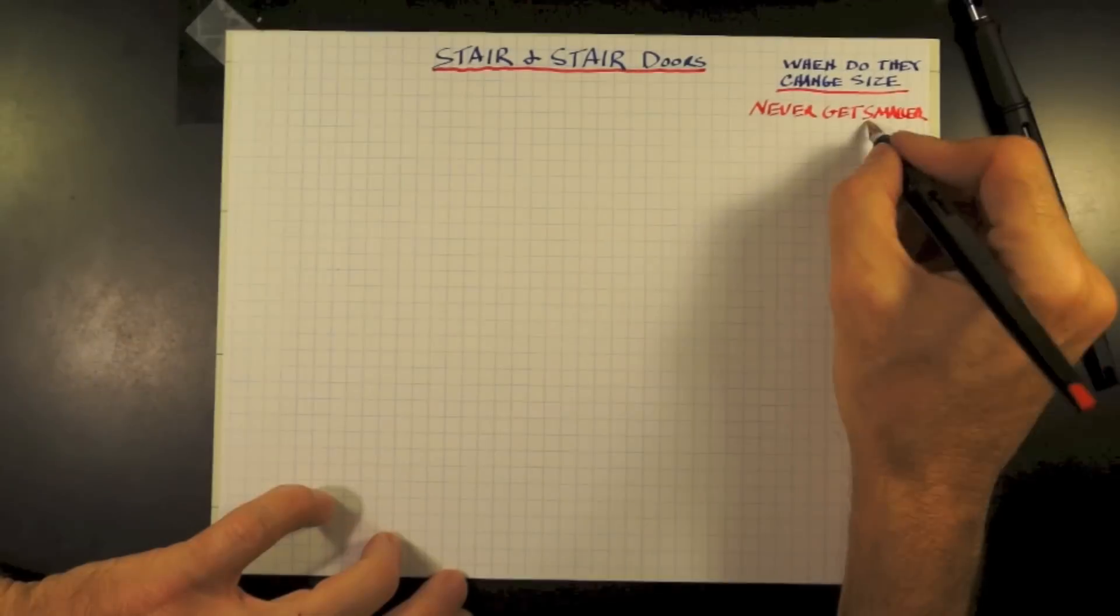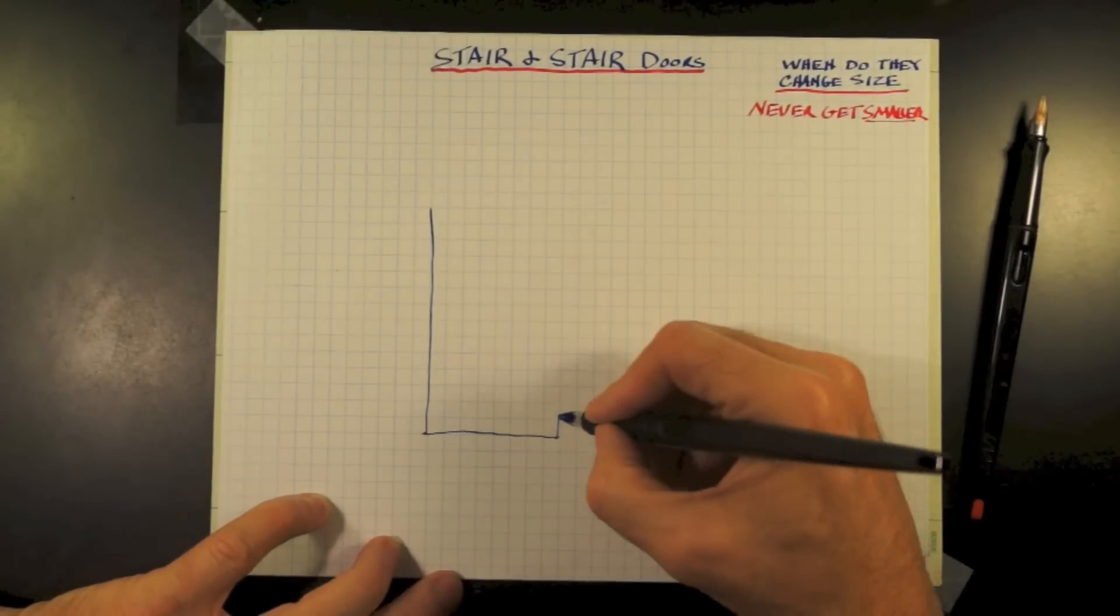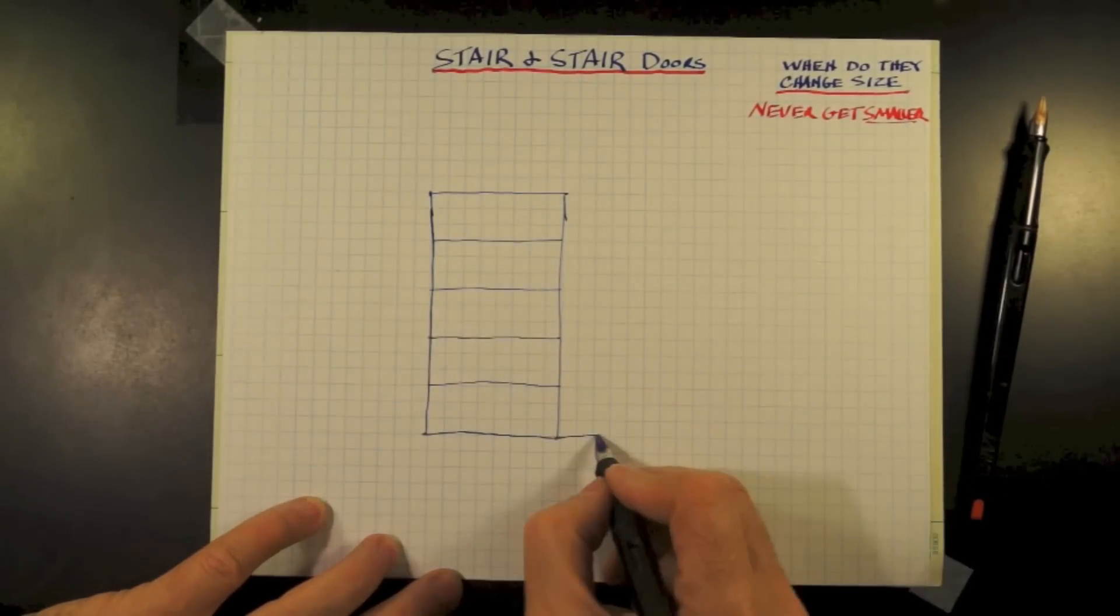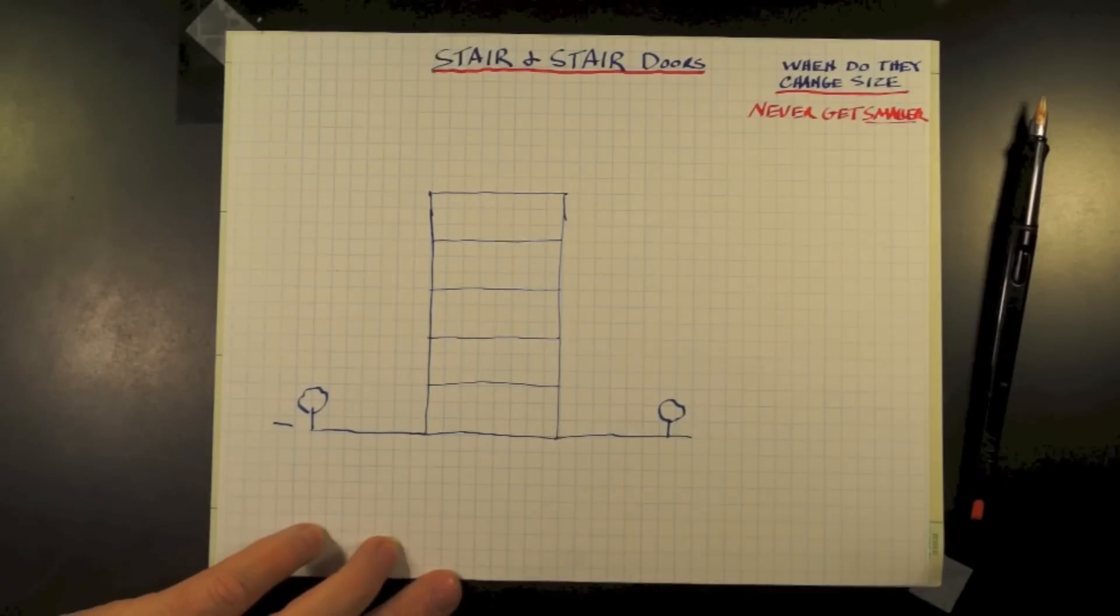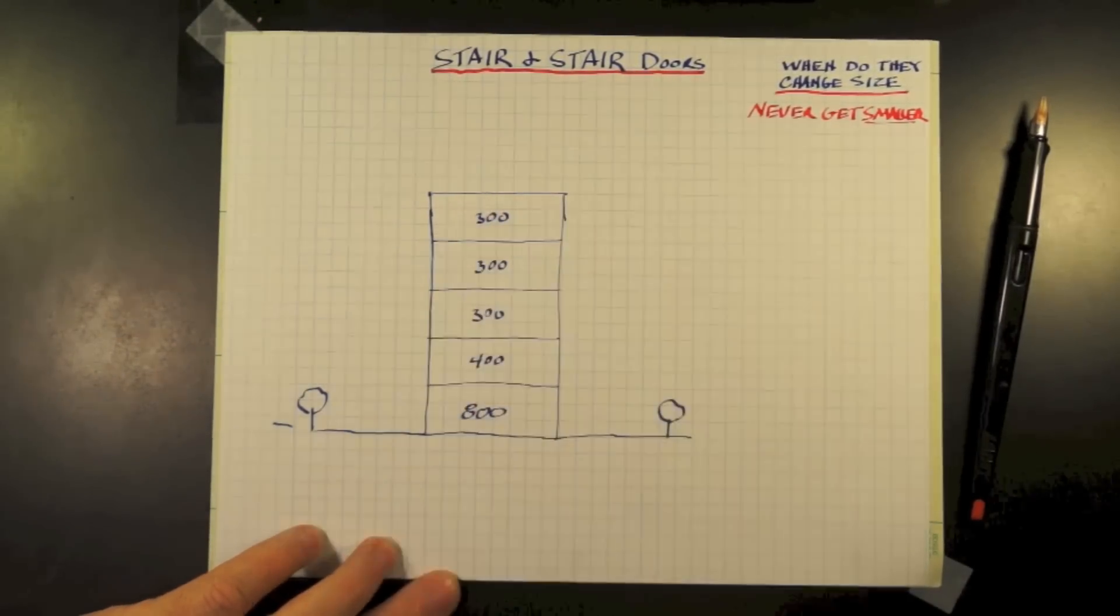Let's start off by drawing a building of five stories. We're picking five just as a conversational point. So in this building, our occupant load for our different floors: 800 for first floor, 400 for second, 300 for three, four, and five.